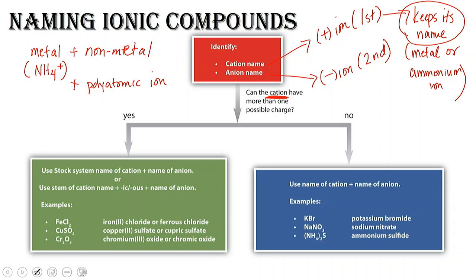So for example, potassium bromide or sodium nitrate — potassium keeps its name because it's only a plus one charge for potassium. So it keeps its name. If it is a transition metal and it can have more than one possible charge, you have to really get into your periodic table and know what's what.